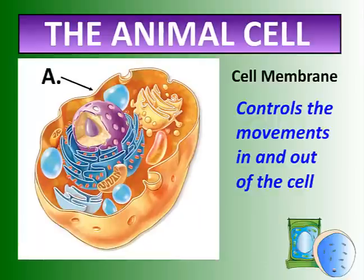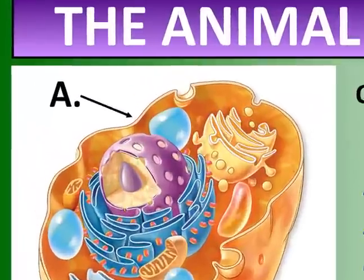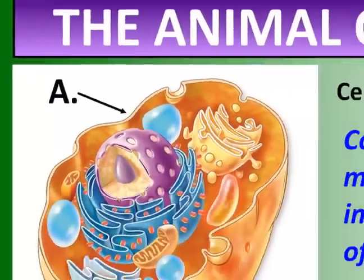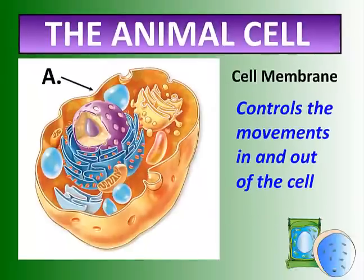First, we have a cell membrane. That's on the outside, and it controls the movement in and out of the cell. If it doesn't get through the cell membrane, it's not allowed in. Some stuff passes freely, other stuff not at all. That's that outer layer — the cell membrane.